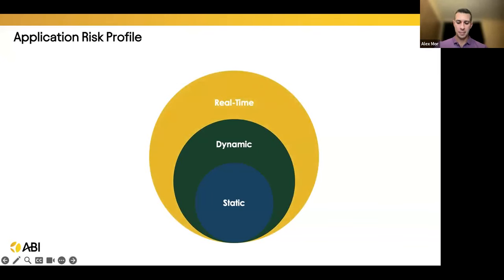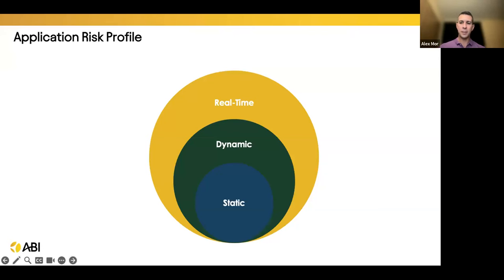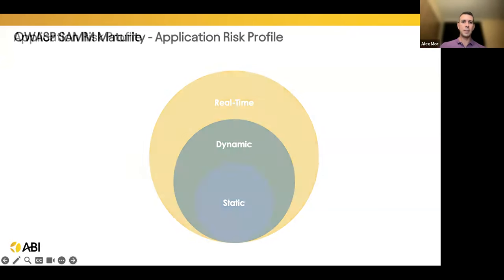Real-time changes require immediate security review: a new API was created without authentication in a high-business-impact application; a secret was exposed or committed to code — a GitHub access token — and we need to stop everything and clean it up. Some of the application's source code was accidentally uploaded to the internet because someone wanted to show off their good API implementation. Real-time risk — you need to be able to revoke that secret and remove it immediately. Some ASPM platforms already provide that real-time visibility.